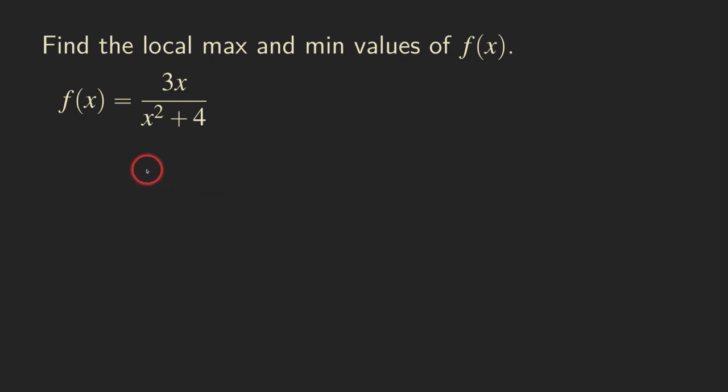First, we need to find the derivative so that we can find the critical numbers. When we are doing the derivative, we are going to use the quotient rule.